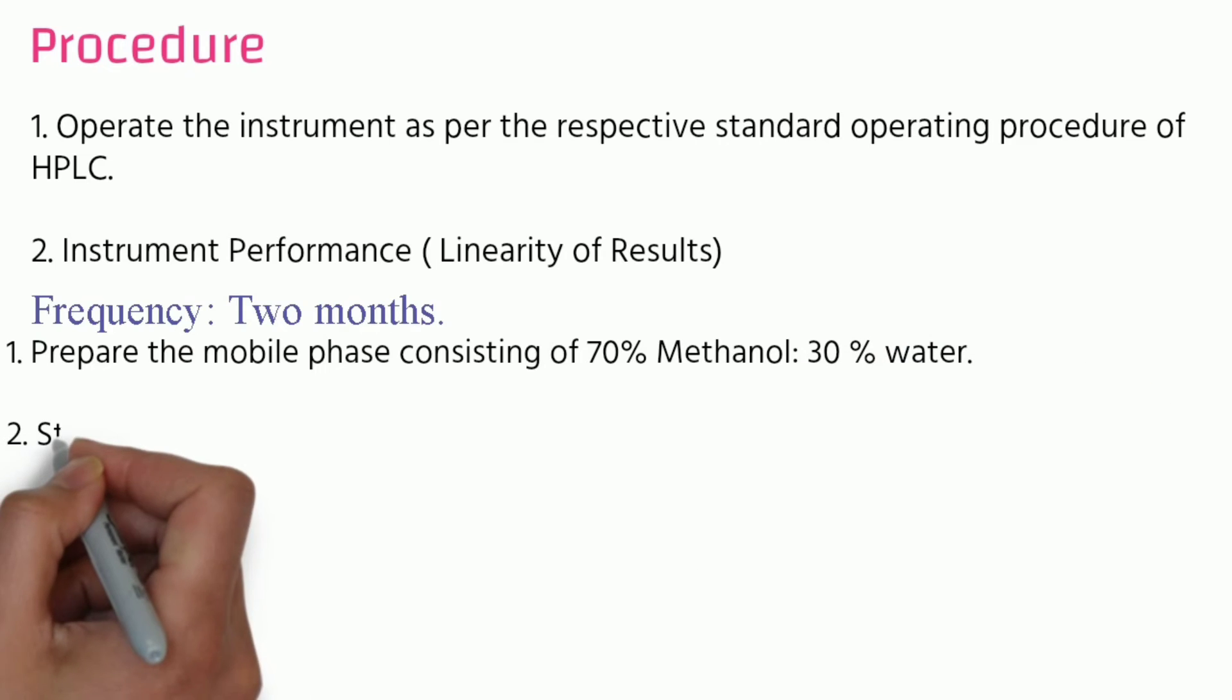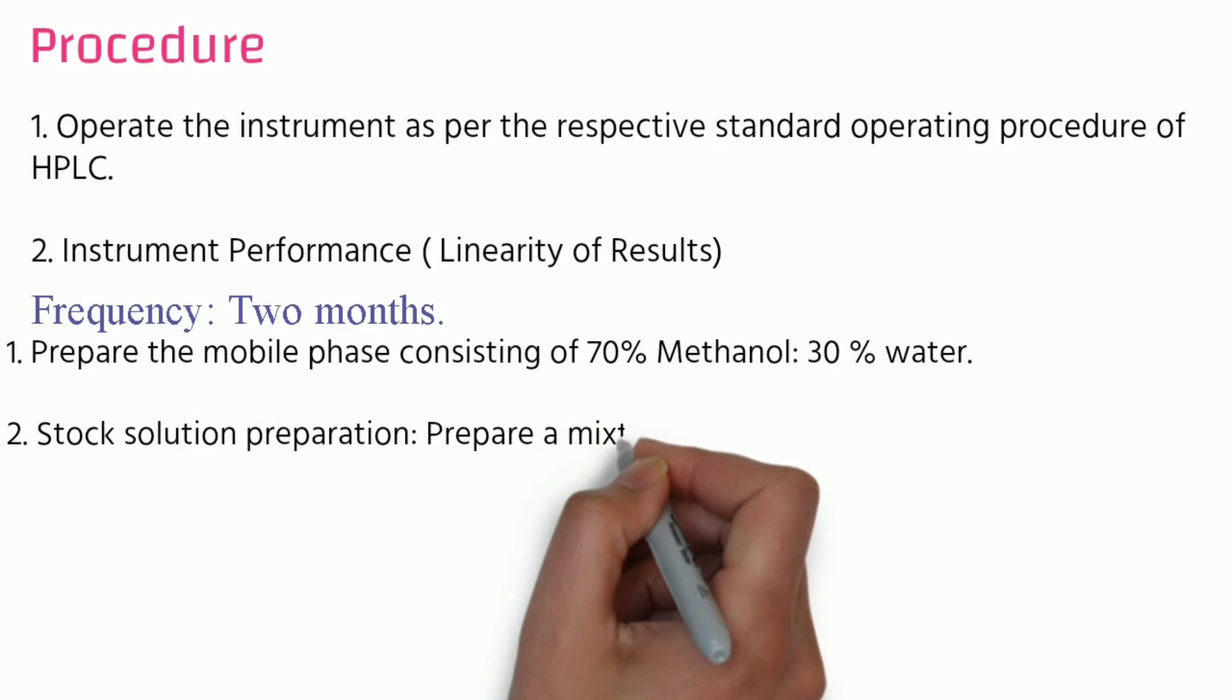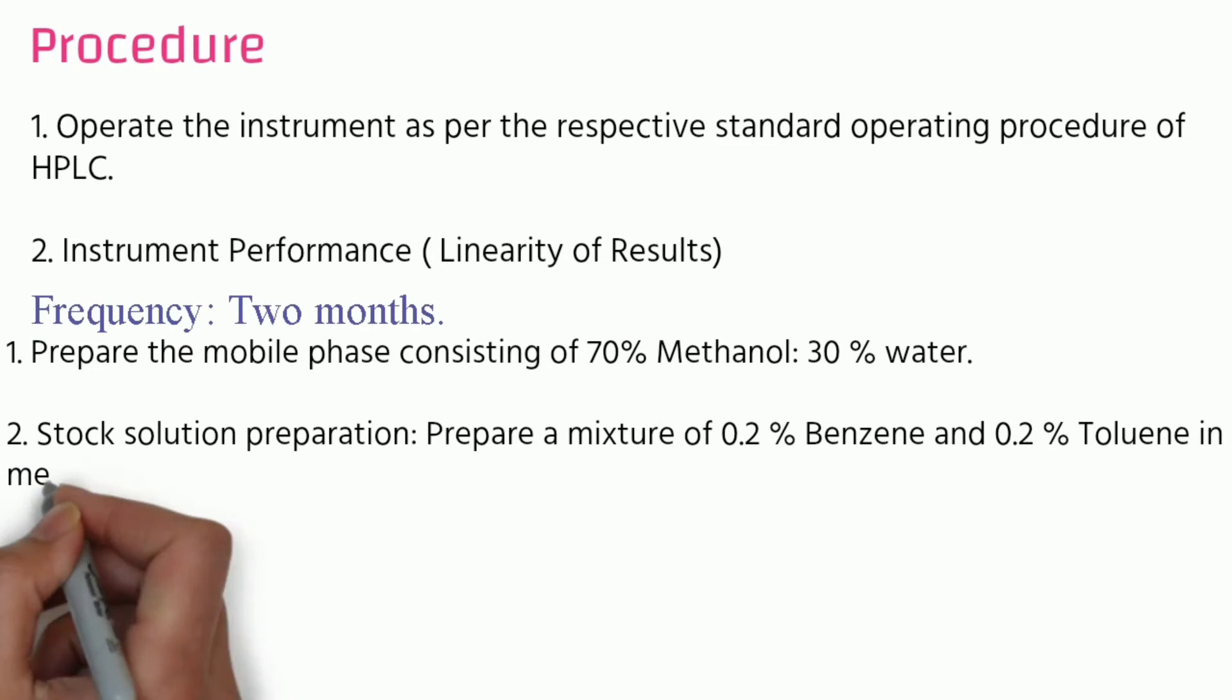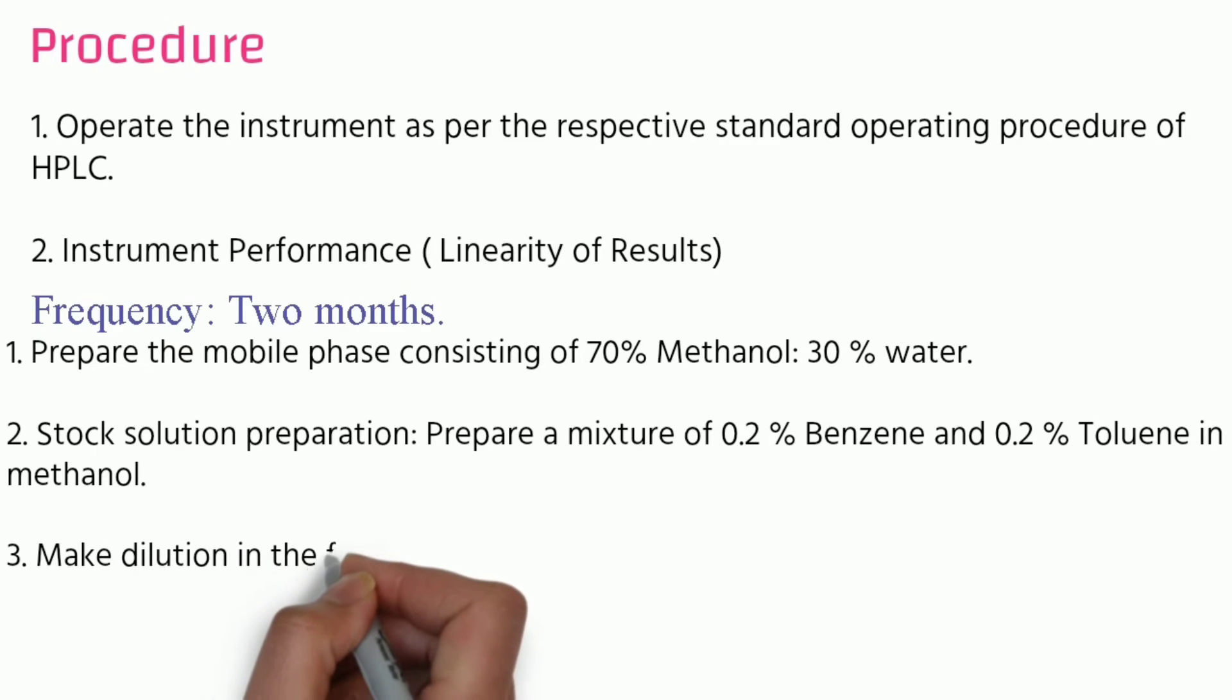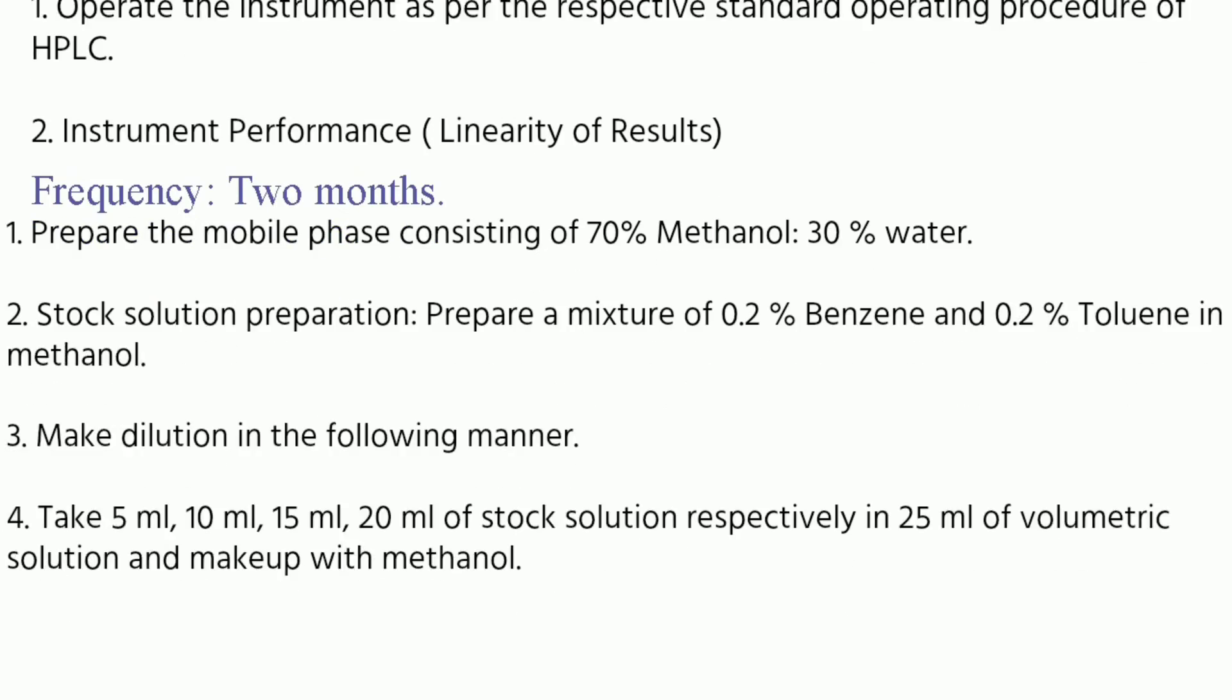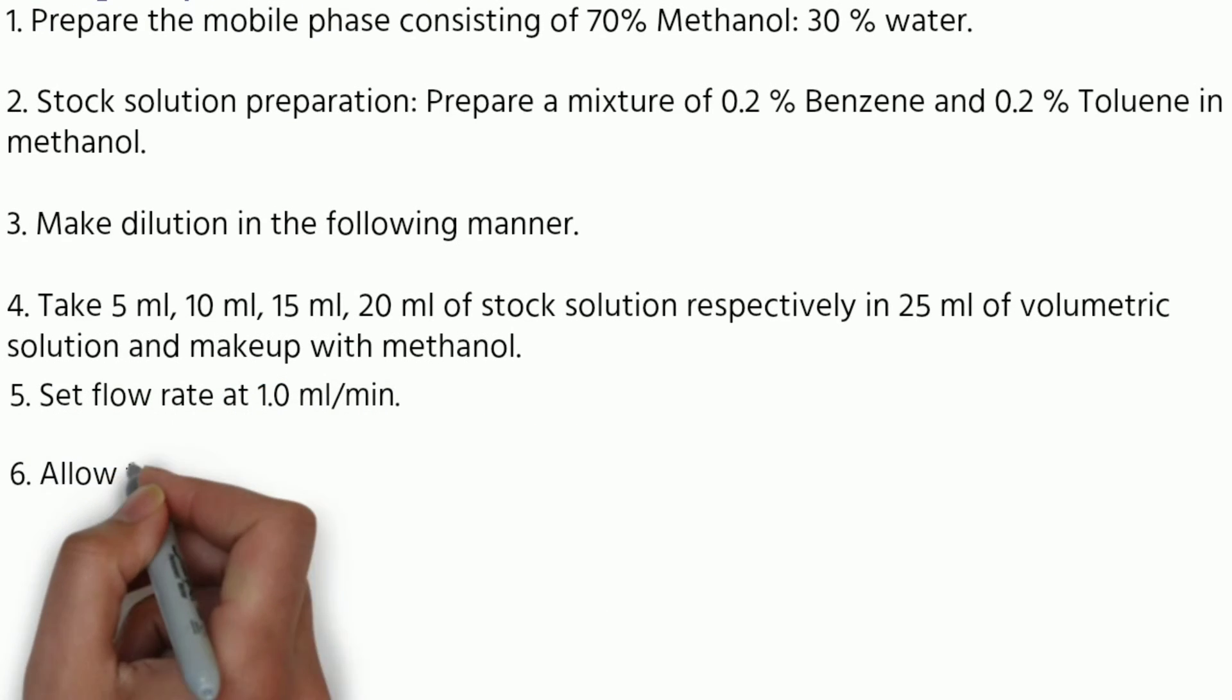Stock solution preparation: Prepare a mixture of 0.2 percent benzene and 0.2 percent toluene in methanol. Make dilution in following manner: Take 5 ml, 10 ml, 15 ml and 20 ml of stock solution respectively in 25 ml volumetric solution and make up with methanol.